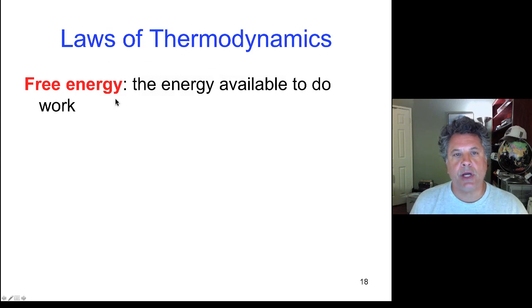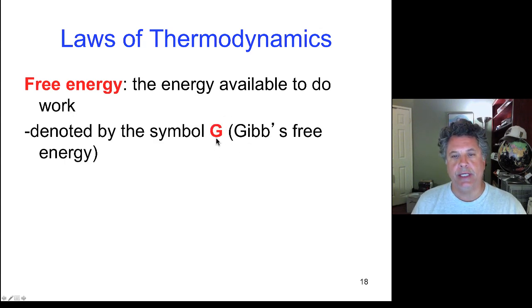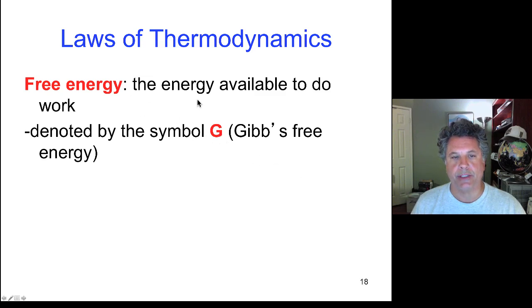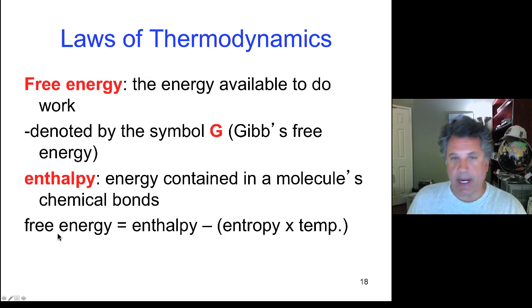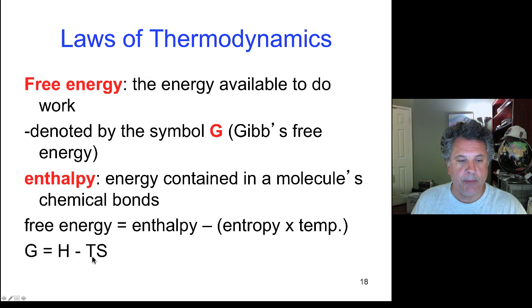So when we talk about the laws of thermodynamics, we can express that tendency towards disorder as talking about what happens to the free energy in a system. The energy available to do work. And we call the Gibbs free energy G. That is the free energy of a particular reaction. Now enthalpy is the energy that is stored in a molecule's chemical bonds. So we have to consider enthalpy as well. And mathematically speaking, free energy is equal to the energy contained in a molecule's bonds minus a factor which is entropy, the amount of disorder, times the temperature in the system. Or G free energy equals H enthalpy, the energy in molecule's bonds, minus T temperature times S. S is the entropy or disorder of the system.